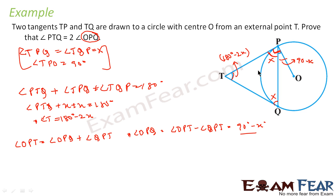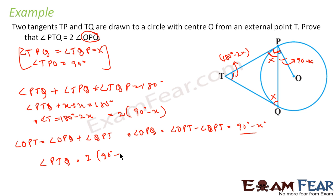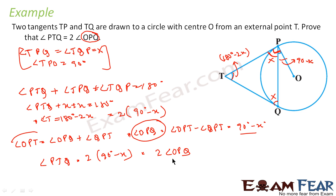Now we can see that angle PTQ is 180 minus 2x, which is 2 times (90 minus x). And 90 minus x is nothing but angle OPQ. Thus we have proved that angle PTQ equals 2 times angle OPQ, which is what we were supposed to prove.